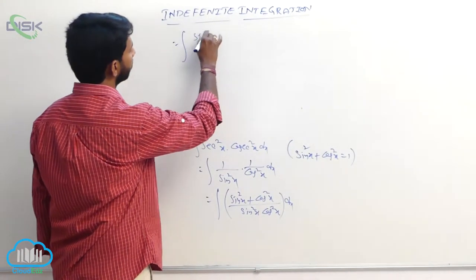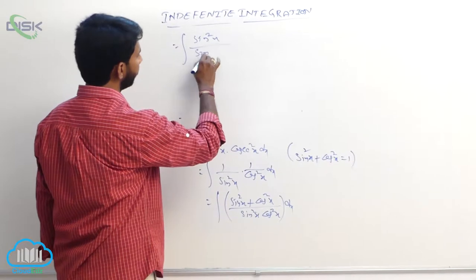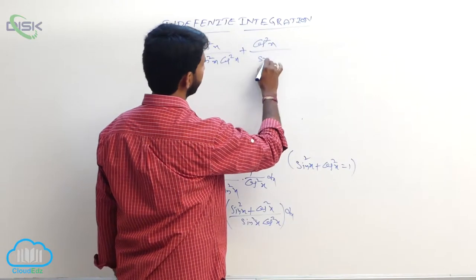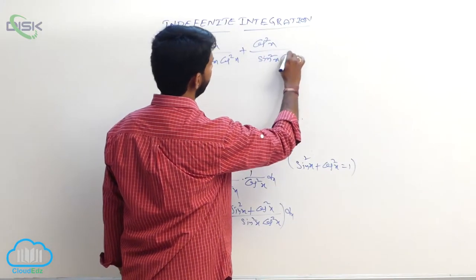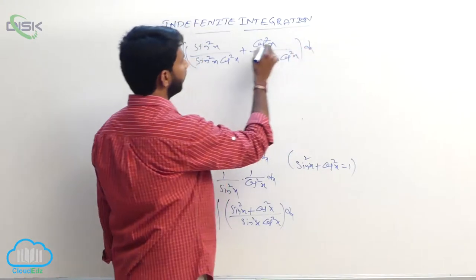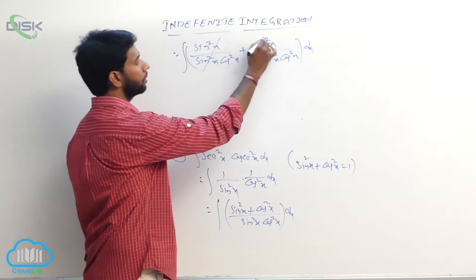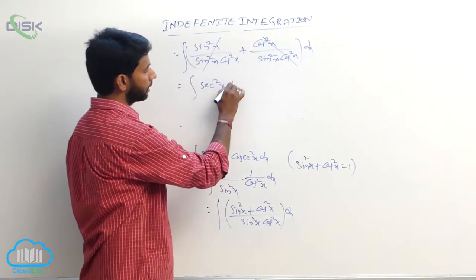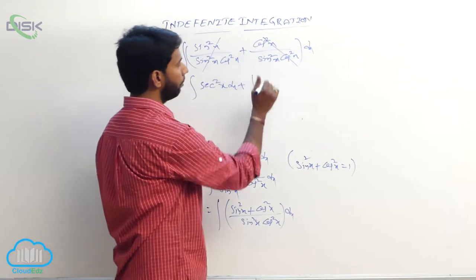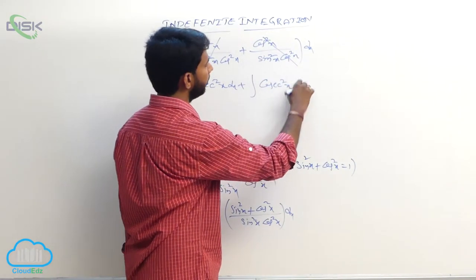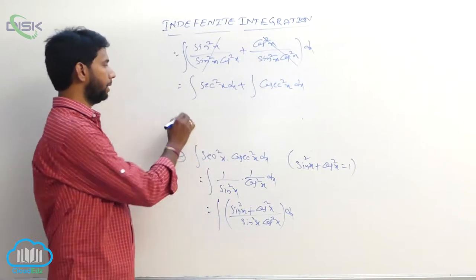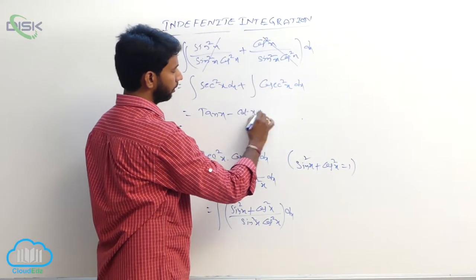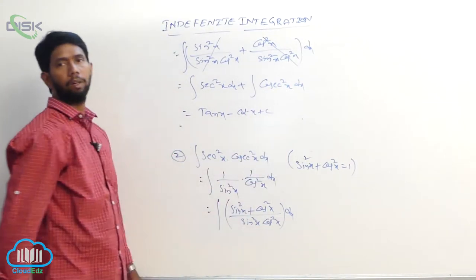The integral becomes: integral of sin²x/(sin²x cos²x) dx plus integral of cos²x/(sin²x cos²x) dx. After cancellation, this is integral of 1/cos²x dx plus integral of 1/sin²x dx, which equals integral of sec²x dx plus integral of csc²x dx. The result is tan x minus cot x plus constant.